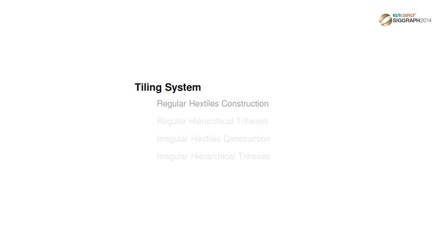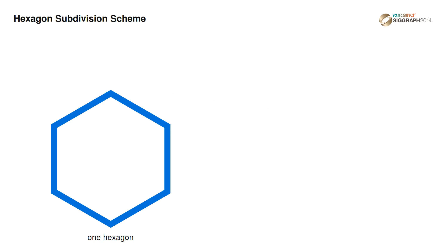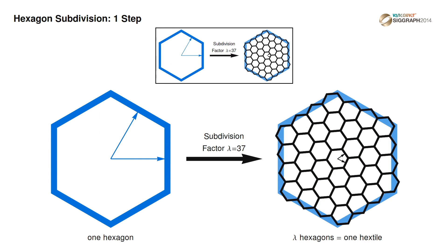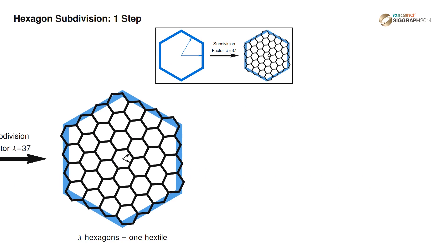We will first explain our tiling system, followed by the offline optimization process. Our method uses hexagons as its building blocks. From the regular hexagonal lattice, we create quasi-hexagonal regions called hex tiles, composed of lambda finer hexagons. This structure preserves the hexagonal topology of the tile lattice at finer subdivision levels.